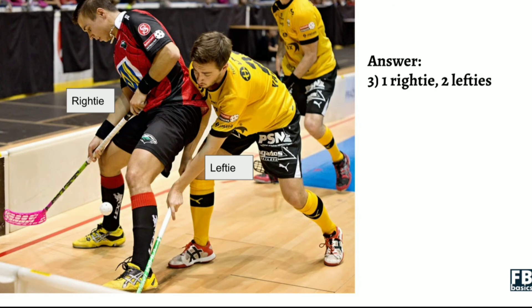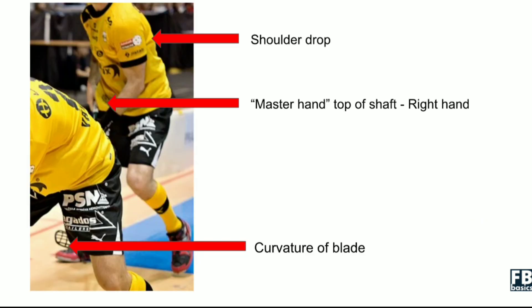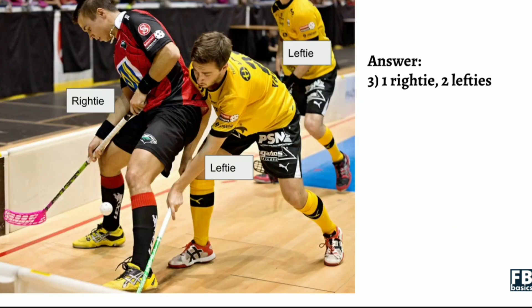From the pictures of the first two players in the front, the righty player is pretty obvious — left hand on top. The lefty player is also pretty obvious — right hand on top. But how about the player at the back? Let me zoom in to answer. There are three visual cues you can use to identify it. First is the shoulder drop — the shoulder that is lower is his left shoulder, which also means his left hand should be lower, holding lower on the stick. You can also briefly see that the right hand is holding on top of the shaft. And lastly, if you have a very good eye, the curvature of the blade is actually a lefty stick or lefty blade. So the answer is one righty, two lefties.